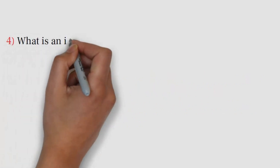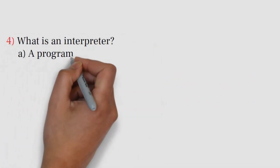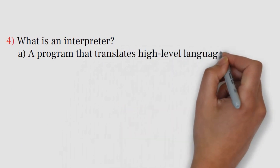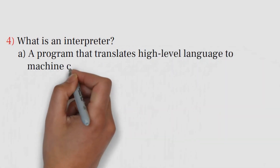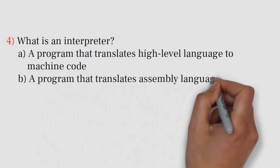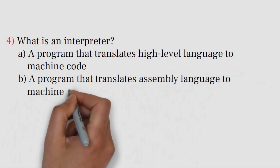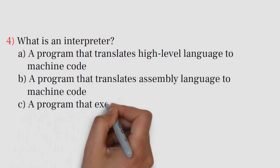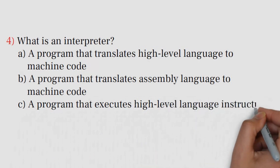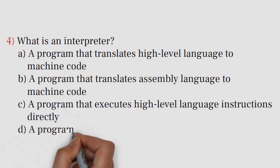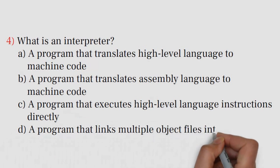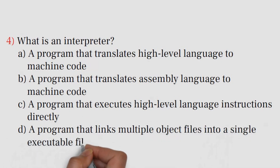Question number 4. What is an interpreter? A. A program that translates high-level language to machine code. B. A program that translates assembly language to machine code. C. A program that executes high-level language instructions directly. D. A program that links multiple object files into a single executable file.